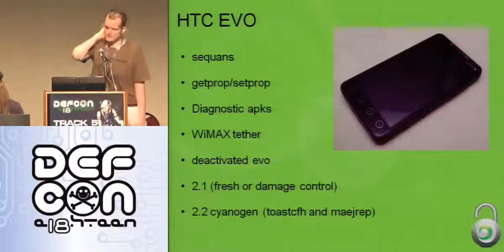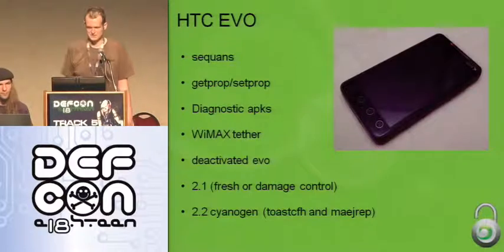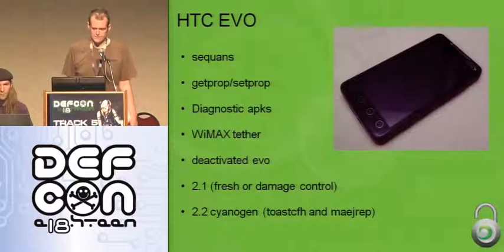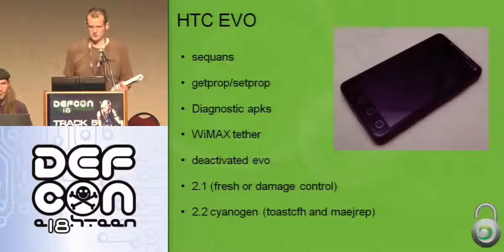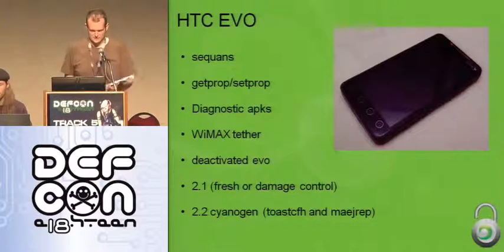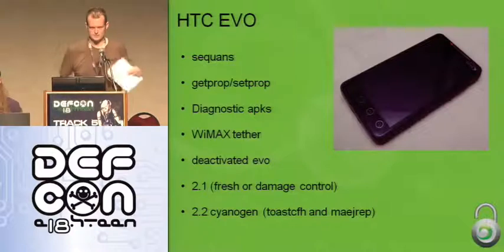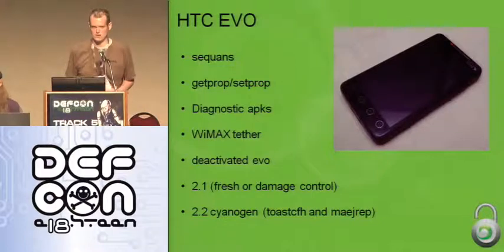Yesterday I got to play with a deactivated Evo and noticed that even when it has no service, you get the captive portal page, which can be bypassed with the same techniques discussed earlier — except it's on a phone. Right now if you want to use WiMAX on the phone, you pretty much have to be on Android 2.1. I've messed with Fresh and Damage Control and they both work fine for WiMAX. Cyanogen doesn't quite work yet, but Toast and others are working hard on getting it working with the Android WiMAX framework released by Clear about a year ago — which would make it all open source, allowing Cyanogen to continue to have 4G in their builds going forward.